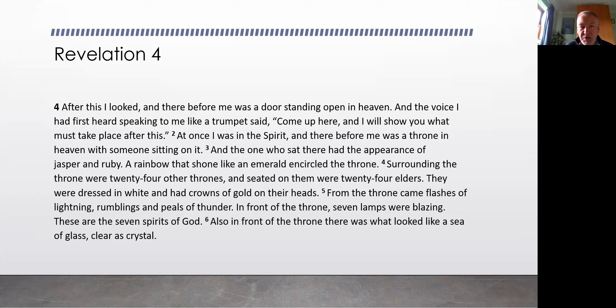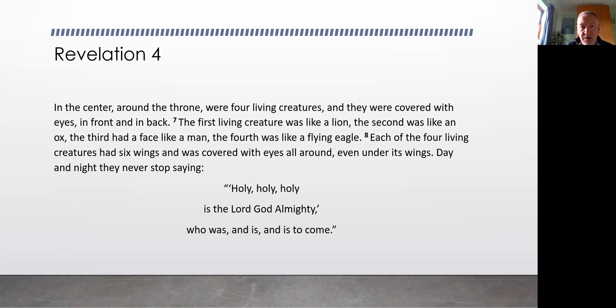From the throne came flashes of lightning, rumblings and peals of thunder. In front of the throne seven lamps were blazing. These are the seven spirits of God. Also in front of the throne there was what looked like a sea of glass clear as crystal. In the centre around the throne were four living creatures and they were covered with eyes in front and in back.